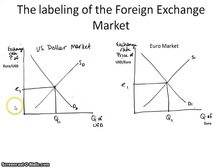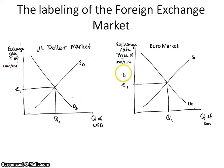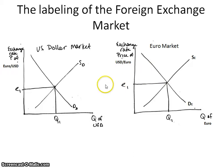In order for a foreign country to buy something in the United States, they have to use dollars. Because we're not part of the EU and we don't use the euro, we cannot buy things in that market without exchanging our dollar for their currency. You have to exchange currencies in order to buy goods in a different country.